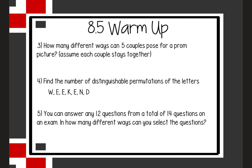Number 3 says: how many ways can 5 couples pose for a prom picture, assuming the couple stays together? Even though it's a couple (2 people), we're treating these as 5 units because each couple stays together. So we're arranging 5 total units, which is 5 factorial: 5 × 4 × 3 × 2 × 1 = 120 different ways.